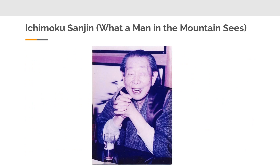This is a gentleman by the name of Goichi Hosoda, also known as Ichimoku Sanjin, which can be translated roughly as 'what a man in the mountain may see.' Ichimoku Sanjin created the Ichimoku method. He actually created it in the late 1930s and used it to trade for about 30 years. He released it to the public as something useful in the 1960s.